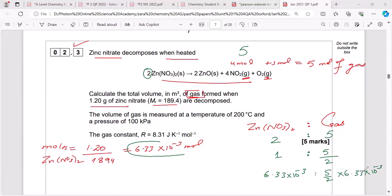So when you solve it, you will be getting 1.59 times 10 to the power minus 2. This is the moles of gas, important to say gas.